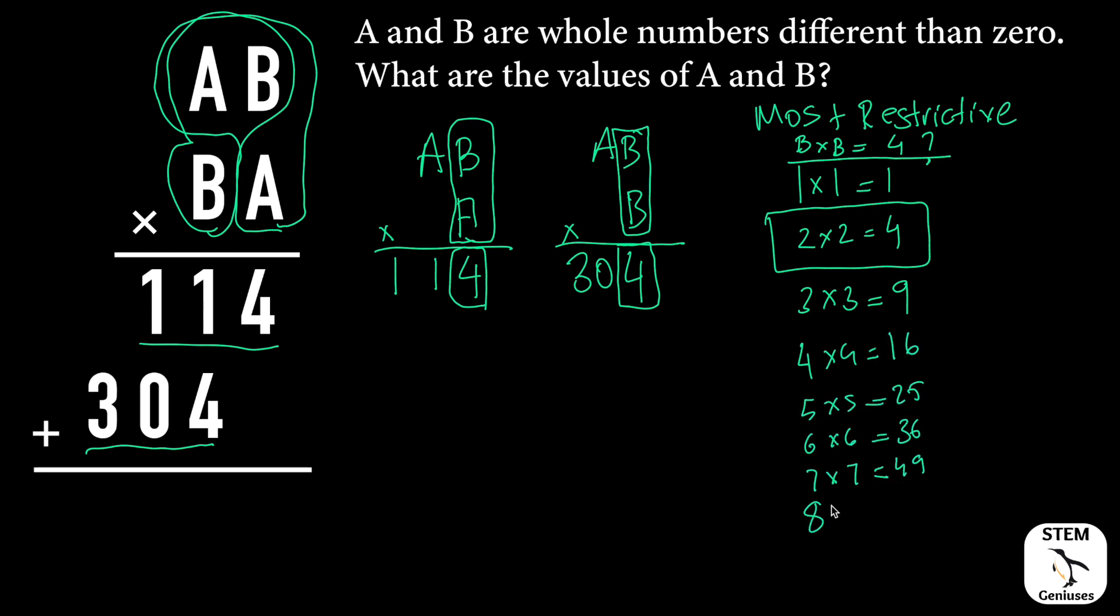Eight times eight gives 64 - yes, this is our option, could be, so it gives four. Nine times nine equals 81. So only two options could be our solution for B: 64 (8 times 8) and 2 times 2 equals 4.